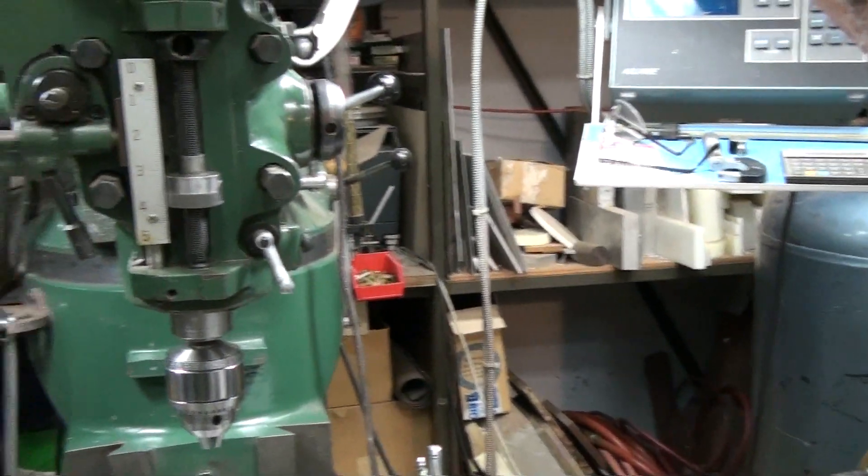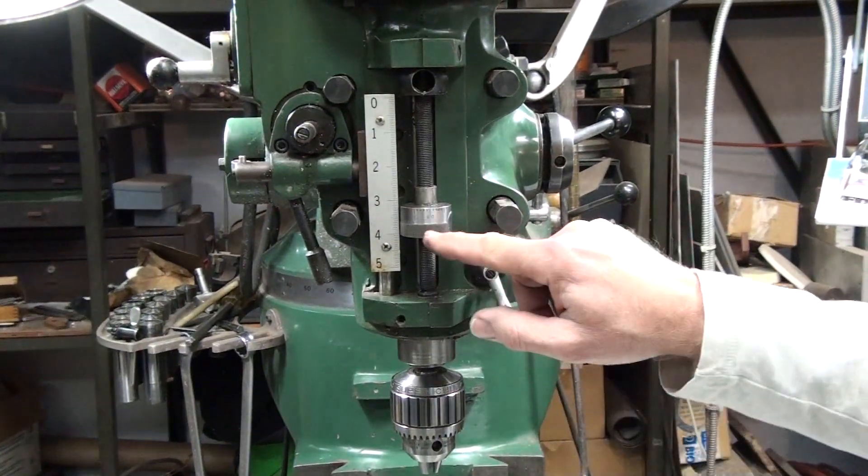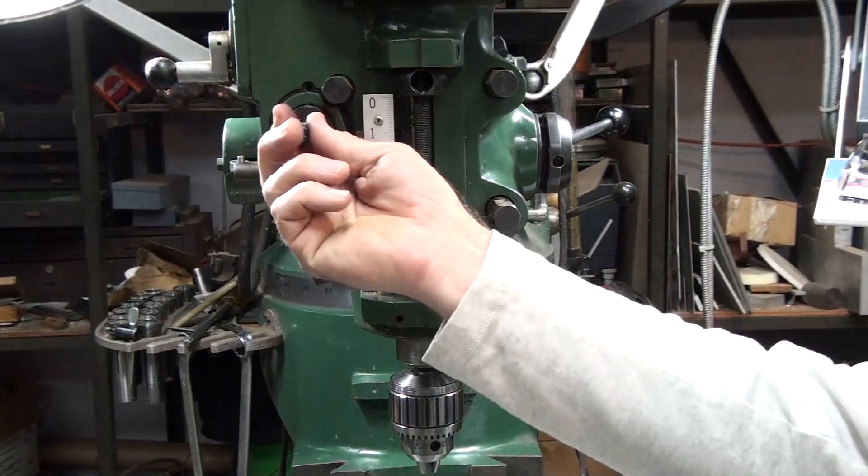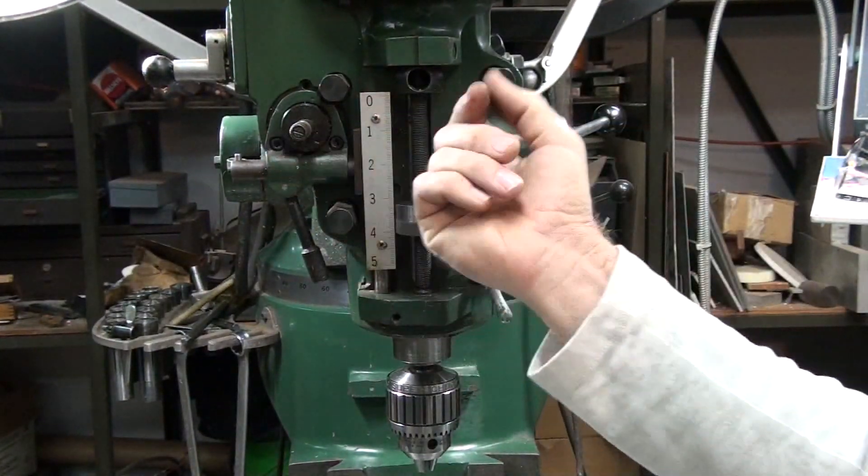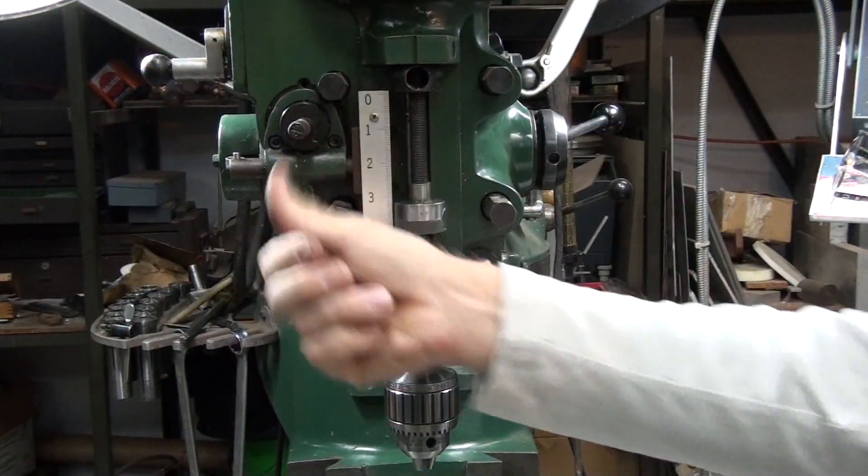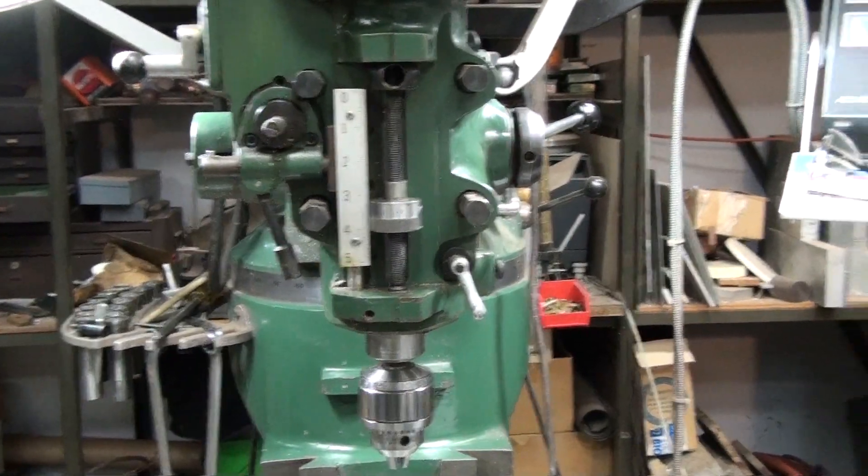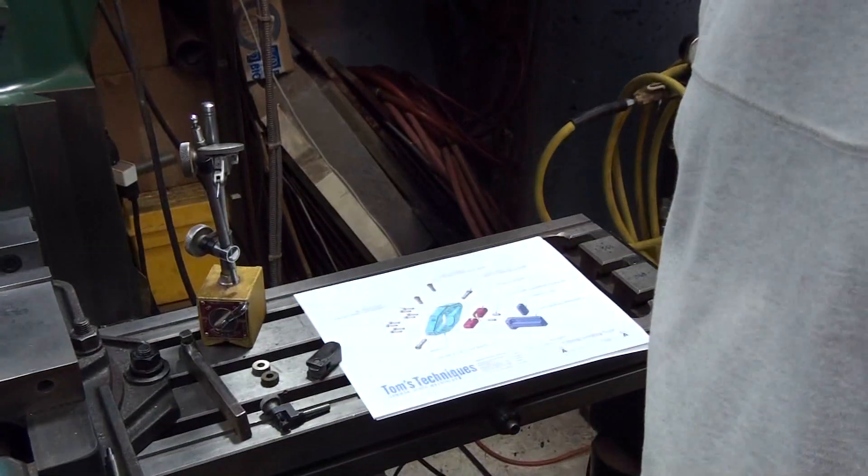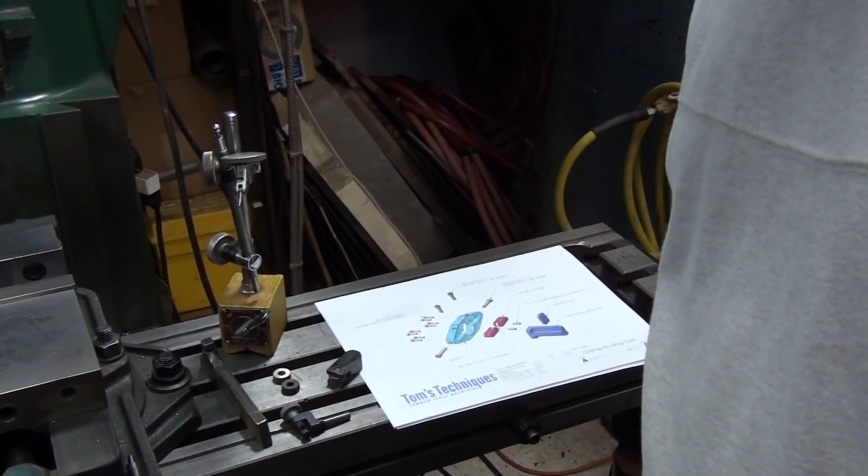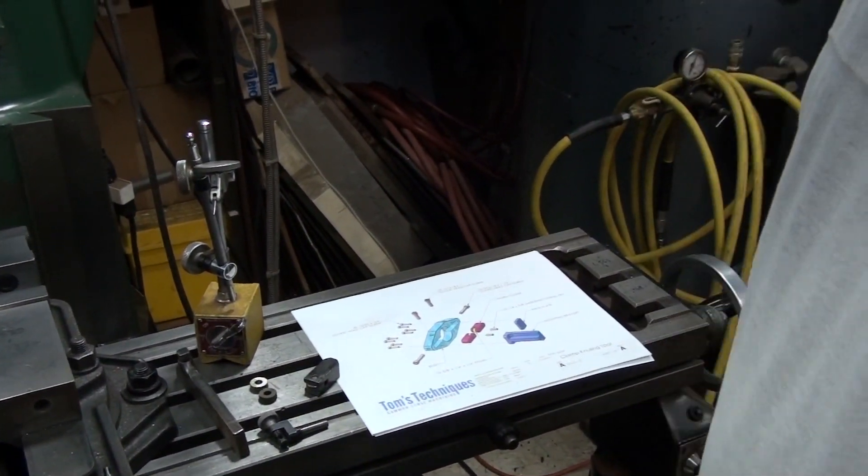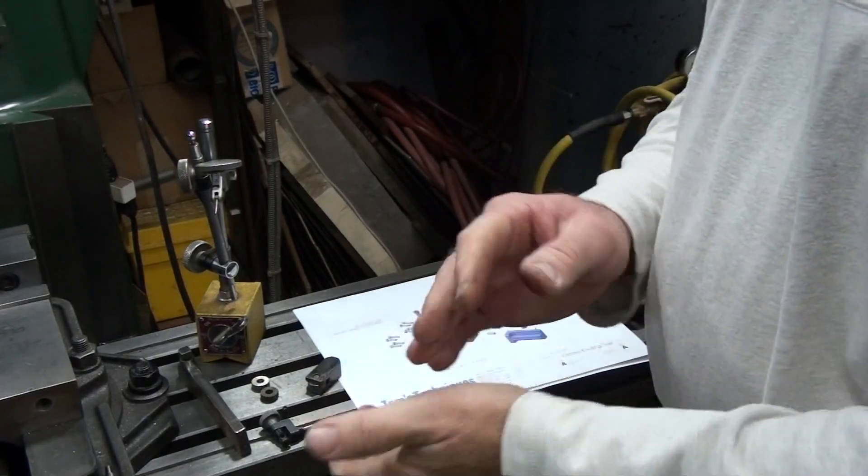Knurls are everywhere you look. Over on my milling machine head here, there are knurls on the depth stop, knurls on the feed shaft here. Everywhere you grab, there are knurls. They're pretty handy, pretty common around the shop. It's good to be able to know how to apply them.